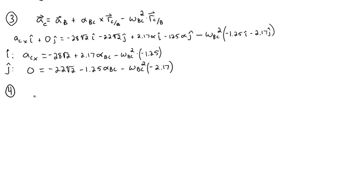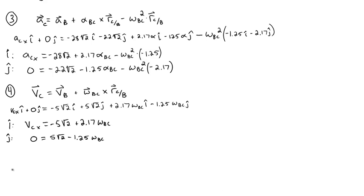So now we're going to look at finding the velocity at C with the relative velocity equation. We've already calculated the velocity of B and we can simply compute the cross product, leaving omega_BC as a variable to find two equations in the I and J directions from this relative velocity equation.